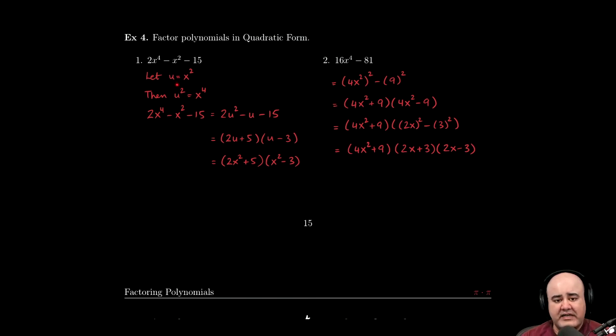Pick a favorite letter. I chose u. There's nothing special about u. You can use any letter you want. This is just me doing a substitution. I'm saying if I let u equal to x squared, well, what would happen if I square both sides? If I square the left-hand side, I'm just going to get u squared. But if I square the right-hand side, x squared times x squared, that's going to give me an x to the fourth. What this allows us to do is it allows us to rewrite the problem using u's that might be easier to factor.